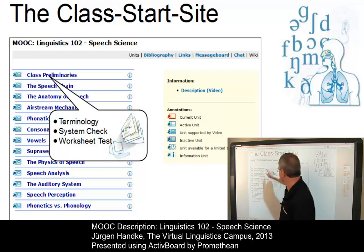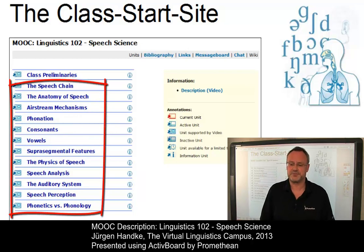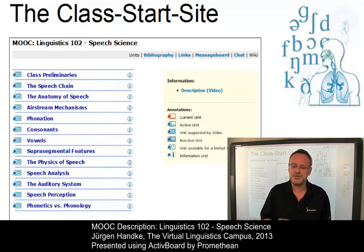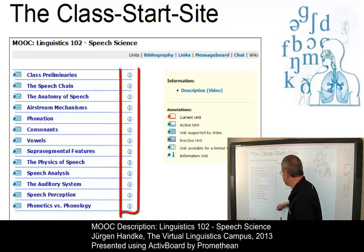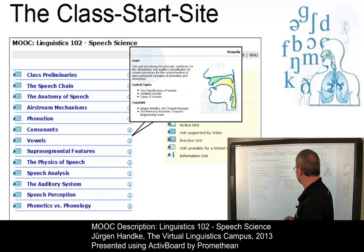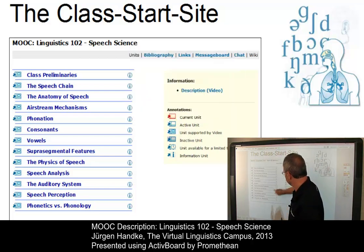The remaining units exhibit the content of this class. If you wish, you can retrieve an overview of each unit by means of a click on one of these information symbols — for example, on vowels. A click on the information symbol opens a small pop-up window where you can find details about that particular unit.